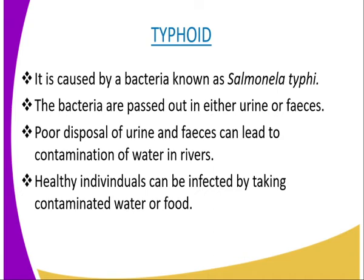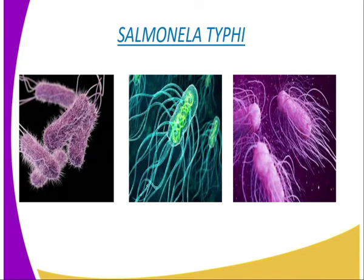The next bacterial disease we are going to look at is typhoid, caused by a bacterium known as Salmonella typhi, shown on our screen. The bacteria are passed out in either urine or feces. Poor disposal of urine and feces may cause contamination of the water supply from rivers, dams and lakes. Healthy individuals can be infected by taking contaminated water or food. Sometimes the bacteria can be present in sweat and saliva, so the clothes and beddings of patients can be sources of infection to others.